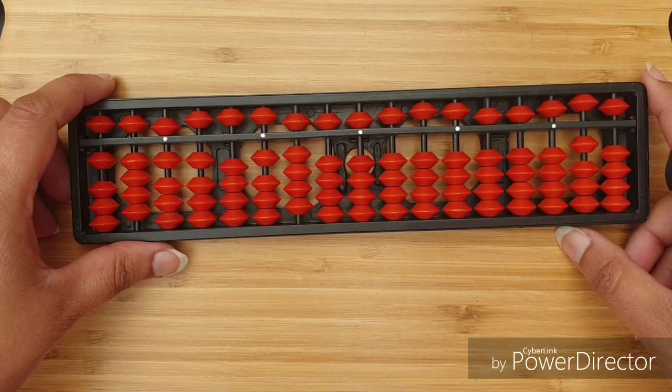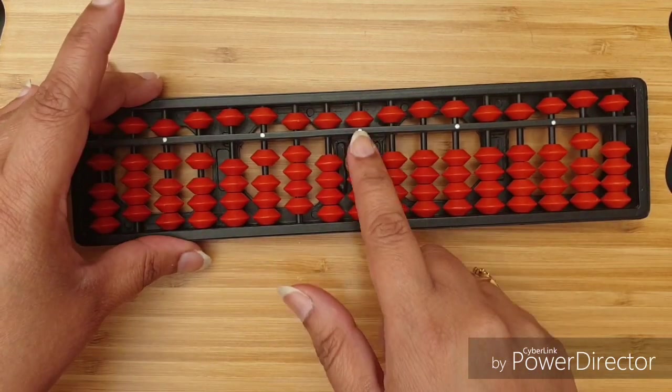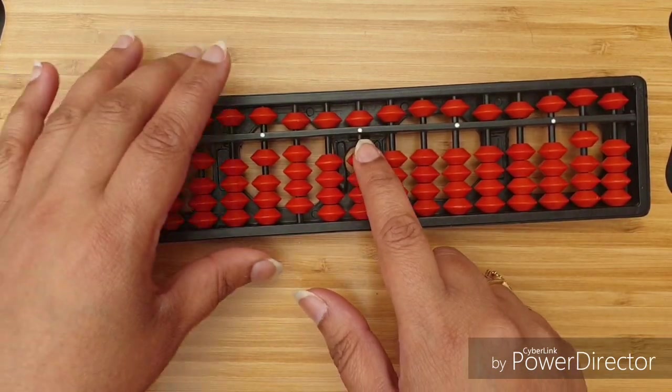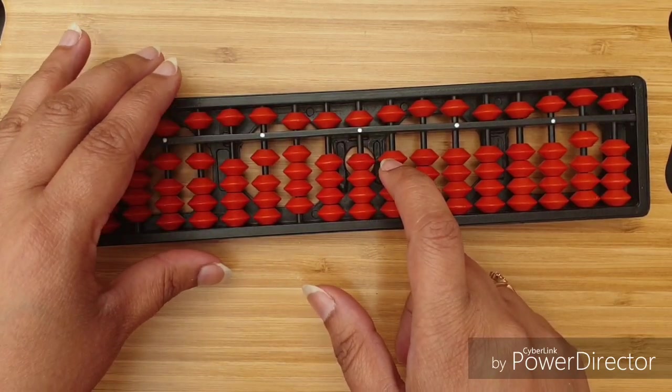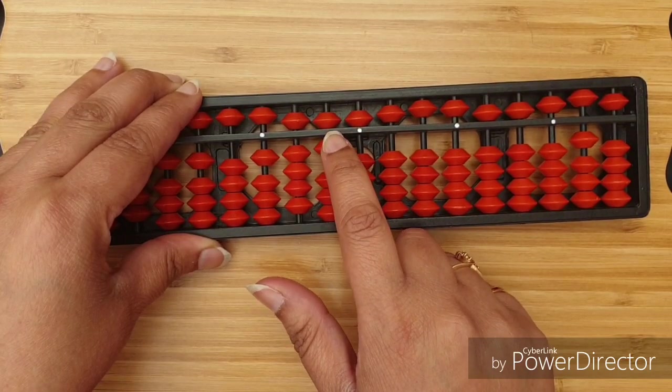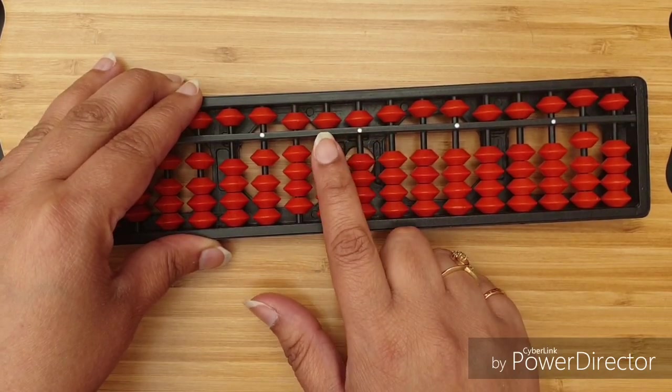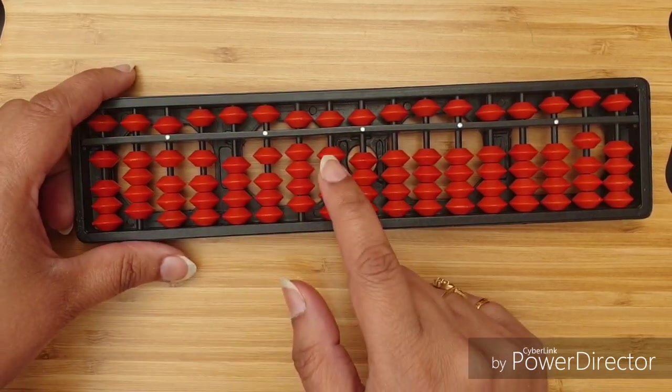So, if I take any lower bead on 1's rod, which is this one, its value will be 1. If I take any lower bead on my 10's rod, the value of this bead will be 10 because the place value is 10. And so on.